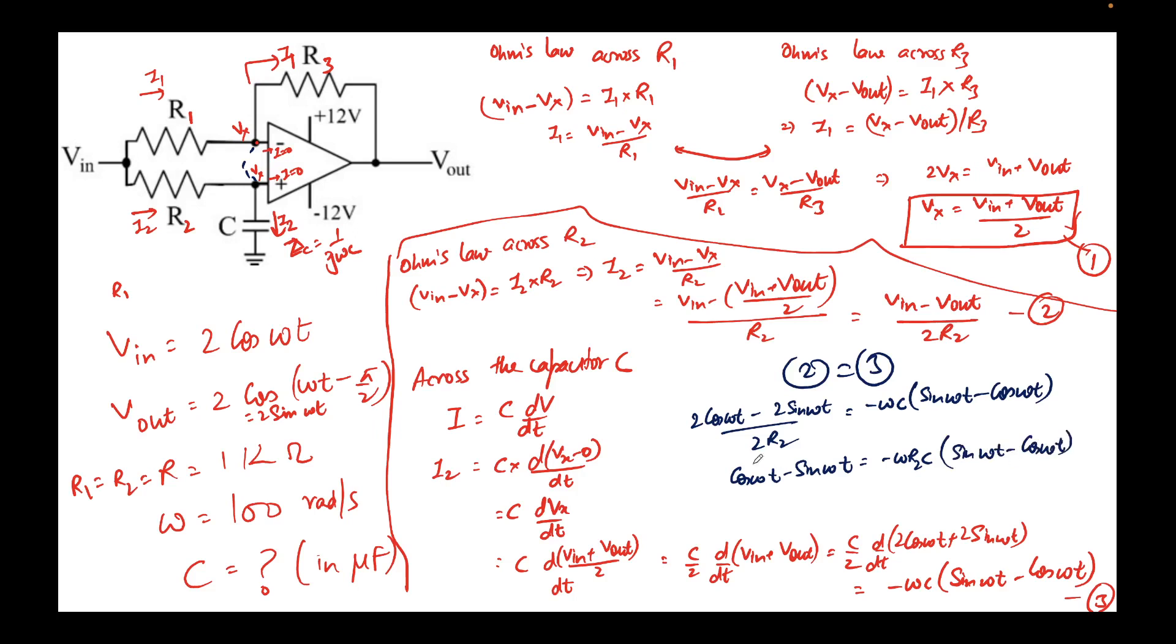Note that this trigonometric term cos omega t minus sin omega t is the same on both sides. So they get cancelled and the negative sign also gets compensated. So we get C equal to 1 over omega R_2. Now I simply plug in the value. Omega is 100, R_2 was 1 kilo ohm.